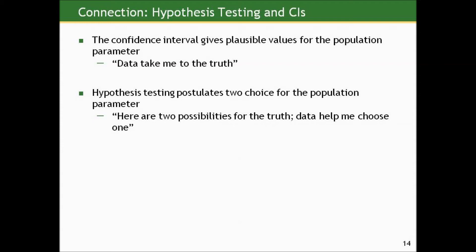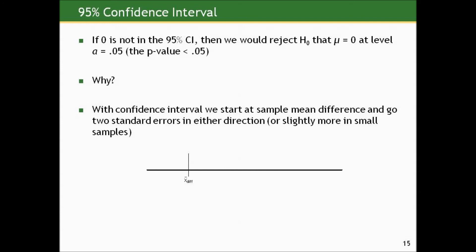Hopefully by now you've started to sense there's some connection between hypothesis testing and confidence intervals. We're making statements about the truth, just doing it in two different approaches. The confidence interval gives plausible values for the underlying population parameter — in most of what we've worked with, a mean or mean difference. We use our data to create an interval that hopefully includes the truth, starting with the data and going to the truth. Hypothesis testing takes the opposite approach: we start with two choices for the truth and then come to the data to help choose one. In either case, we're making statements about some underlying quantity, and these ways are complementary.